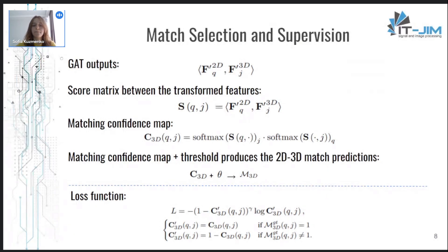Thus, the model is supervised with 2D-3D point correspondences. And for the loss function, they used the focal loss over the matching confidence map.